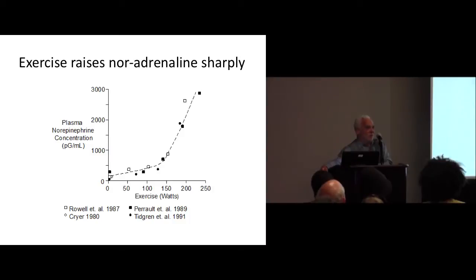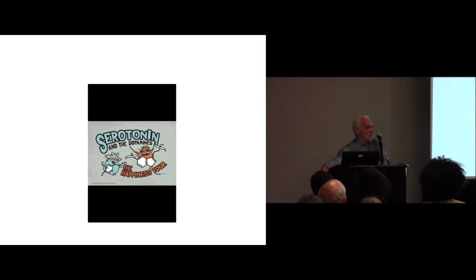Back to norepinephrine, noradrenaline. It rises sharply in physical activity. So when you're climbing, there's a lot more of it in your brain. This happens to be in blood plasma, but it's the same deal in brain. Two other neurohormones, the other two of the big three that kind of run the place, are serotonin and dopamine.